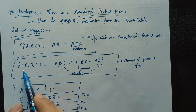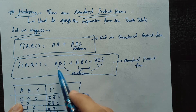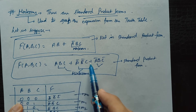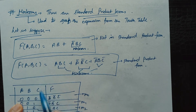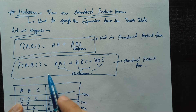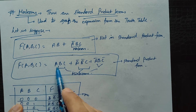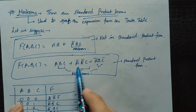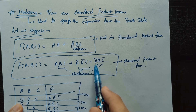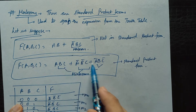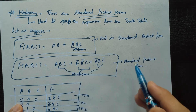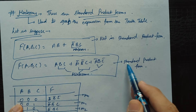Consider F(A,B,C) = ABC + A-bar·B-bar·C + A-bar·B·C-bar. Here the total number of variables is A, B, C — all three are present in each term. So all three are min terms and this is a standard product form, unlike the previous example.